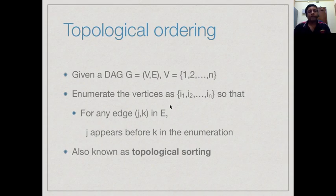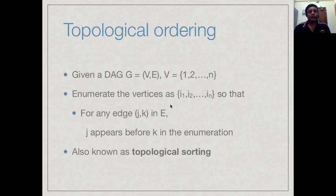Any directed acyclic graph can be topologically ordered. If we think of the vertices as being 1 to n, we can write them out in a sequence such that for every edge jk in the graph, j appears before k in the sequence. If we think of these as tasks with dependencies, it means we can do tasks in an order where before doing k, we have finished its dependent task j. This is called a topological sorting.